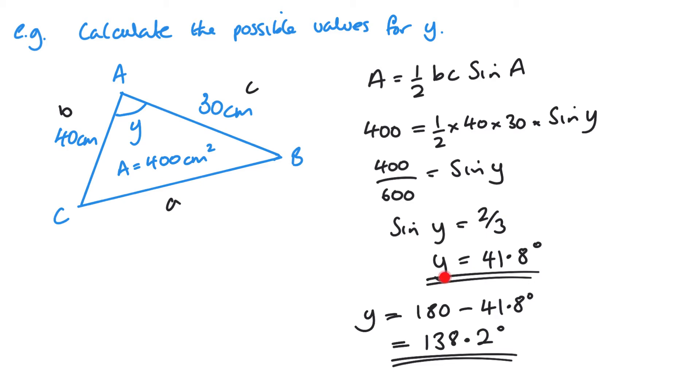If you try both 41.8 and the 138.2 into this formula for Y, you'll see that both answers will give you 400. So there are two possible answers. That's just to do with how sine works between 0 and 180. Sine is positive, so there's always going to be two possible answers as a triangle also adds up to 180.